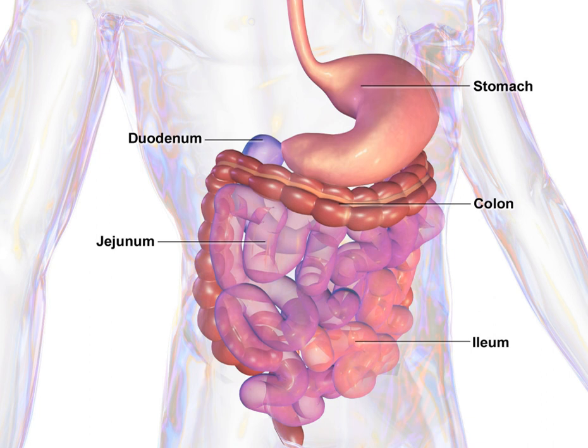The gastrointestinal tract is an organ system within humans and other animals which takes in food, digests it to extract and absorb energy and nutrients, and expels the remaining waste as feces. The mouth, esophagus, stomach, and intestines are part of the gastrointestinal tract.